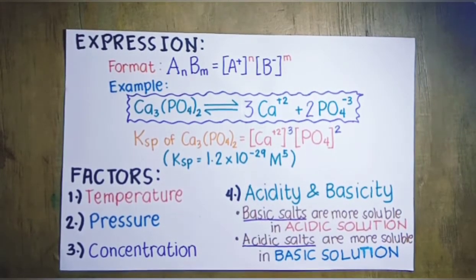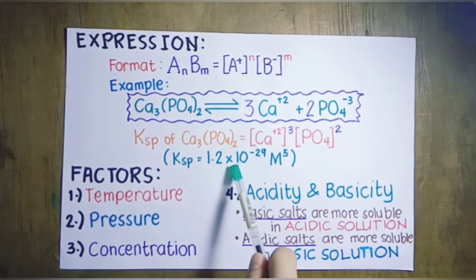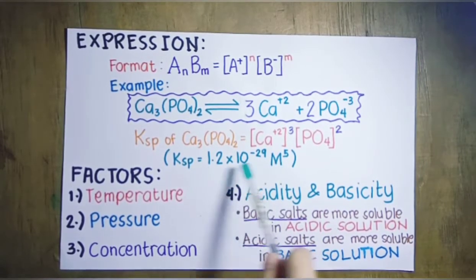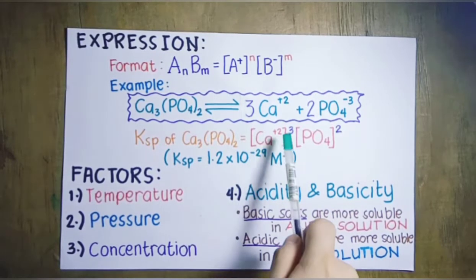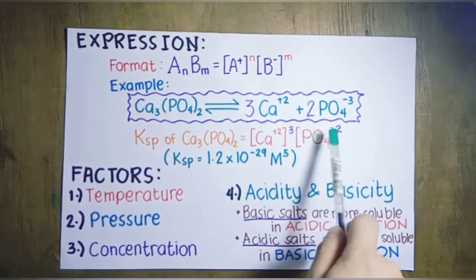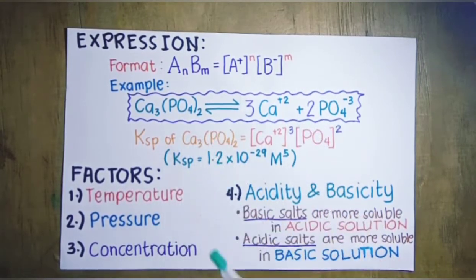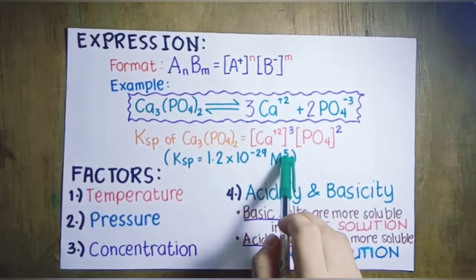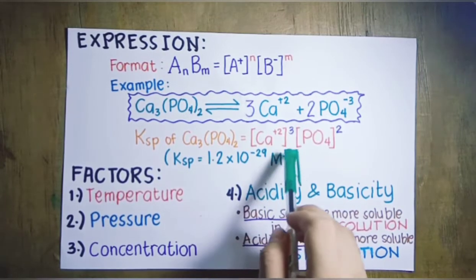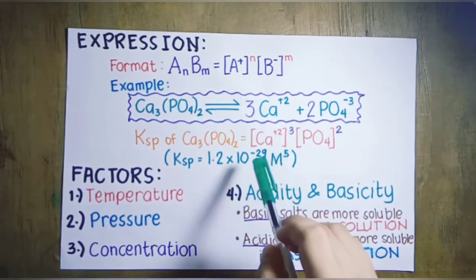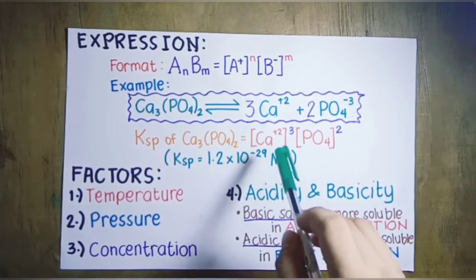In reality, the solubility product constant of calcium phosphate is 1.2 × 10⁻²⁹ mol⁵. This value comes from the product of the molar concentration of calcium ion raised to the third power and the molar concentration of phosphate ion raised to the second power. The unit is molar raised to the fifth power, where the fifth power comes from the sum of the stoichiometric coefficients: 3 + 2 = 5.